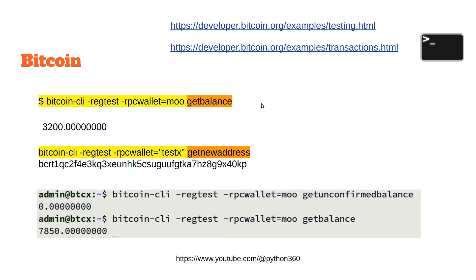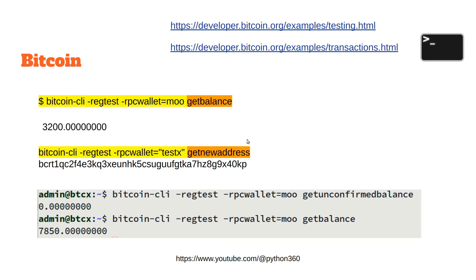Get balance, get new address — example transactions. The balance shown is for the wallet called 'mu'. I also had another wallet called 'testx' and used get new address, returning a bc1rt1 address. Then get unconfirmed balance returns zero, and get balance returns 7850. Hopefully these yellow and orange examples are useful.